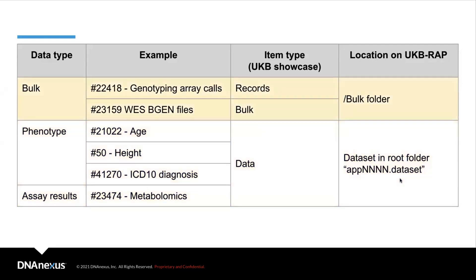The bulk directory contains large-scale raw data files including PLINK and BGEN files from genomic measurements like whole exome or whole genome sequencing. The bulk data can also include large-scale image files from MRI scans. An example of bulk data is field 22418, which corresponds to the genotype array calls. This data is of item type records in the UKB showcase, where in general, the bulk data can be found to have either type bulk or records in the UKB showcase, and this data can be found in the bulk directory folder of your project.